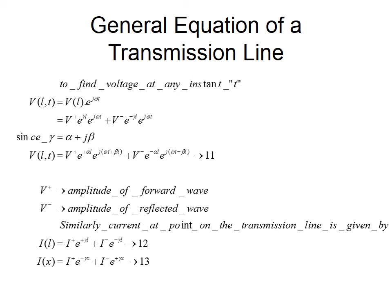Since γ is a complex value, V(L, t) can be expressed as V⁺·e^(αL), which represents the magnitude of the forward travelling wave, multiplied by e^(j(ωt + βL)), which represents its phase. A similar expression holds for the backward travelling wave. A similar simplification applies to the current equation, yielding the current at any point on the transmission line. Equation 12 gives current from the load end and equation 13 from the source end.